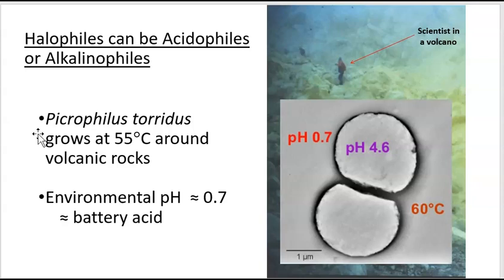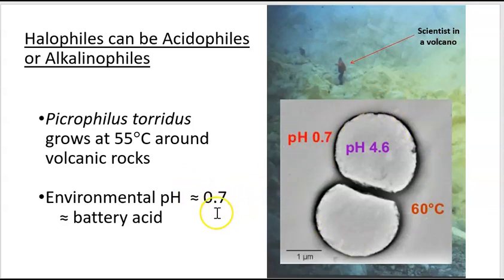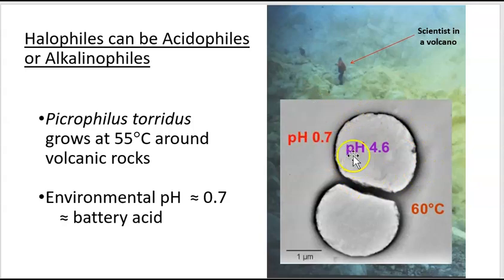An interesting example: a scientist crawling in a volcano crater isolated a bacterium growing in volcanic rocks at 55°C. More remarkably, the surrounding pH was 0.7 — equivalent to battery acid, which would dissolve skin. These cells maintain an internal pH of 4.6 by using pumps built into their membrane to actively pump protons out of the cell, at a small energy cost.